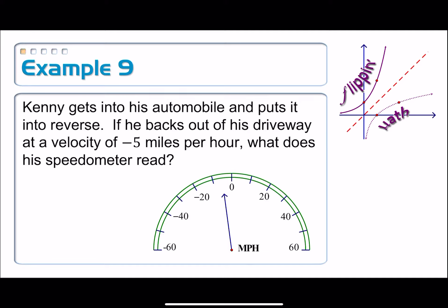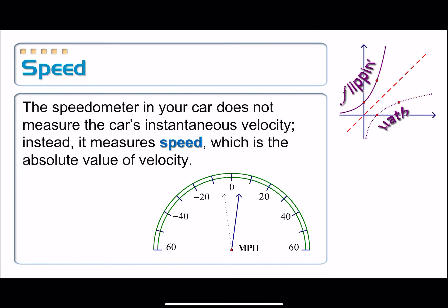Well, have you ever looked down at your speedometer? Does it have any negative numbers on it? No, and the reason why is because speedometer, as the word implies, measures speed, not velocity. And how do you get speed from velocity? You take its absolute value. That's right.